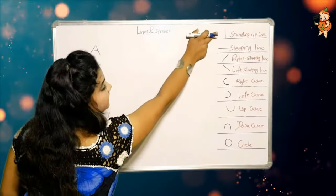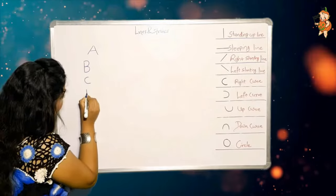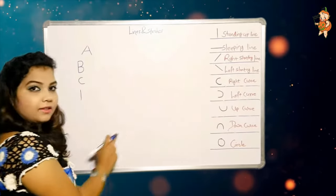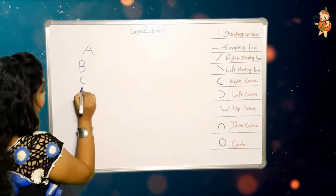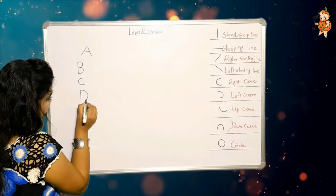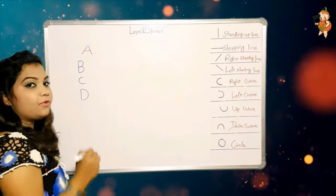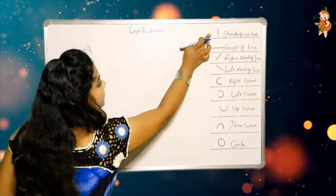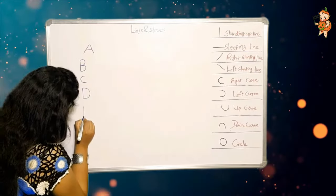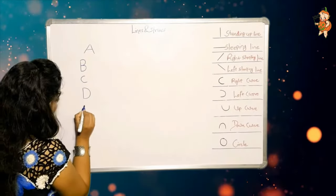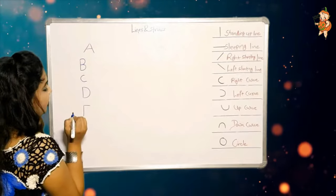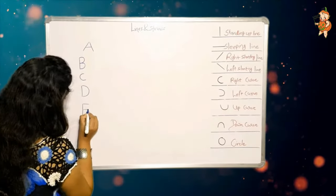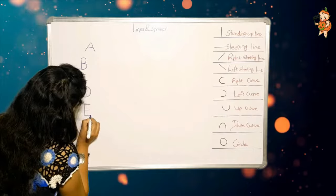One standing up line and one left curve make C. Now it's time to make E — one standing up line, one sleeping line, and another sleeping line.